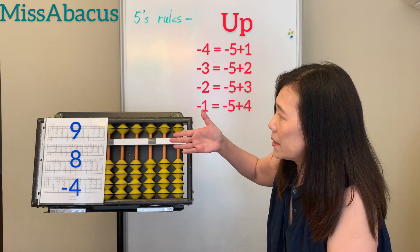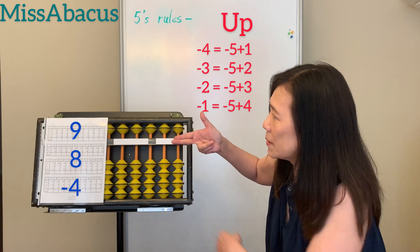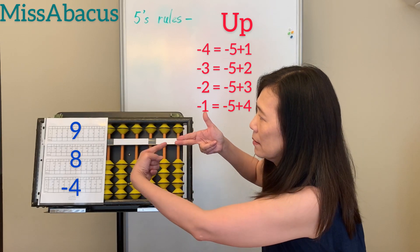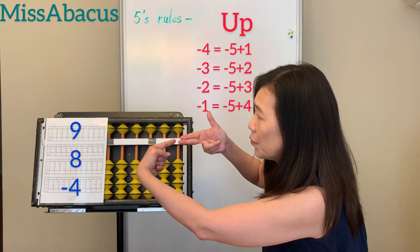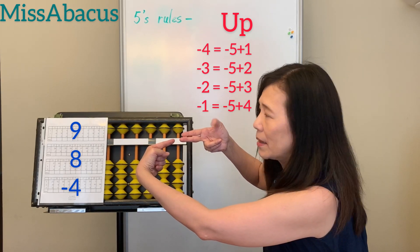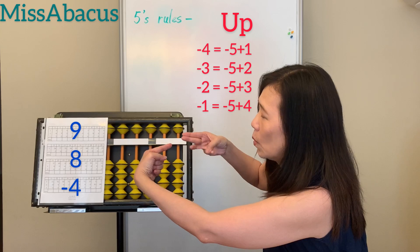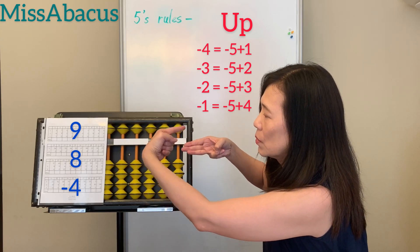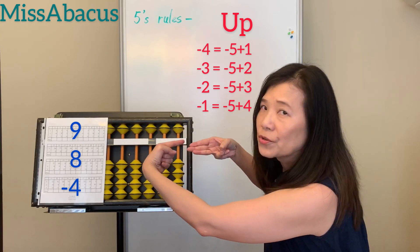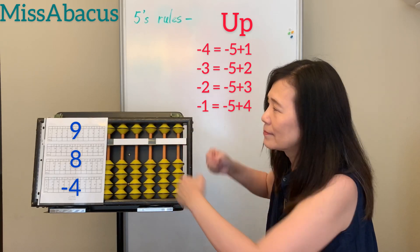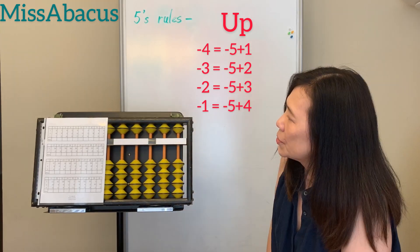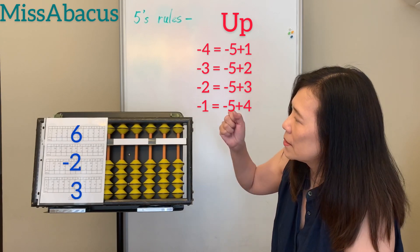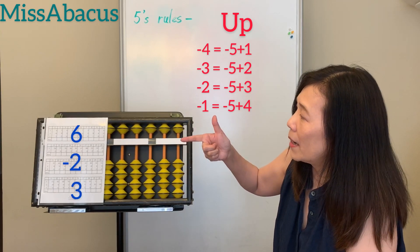Number 9: 9. Plus 8: minus 2, plus 10. Then minus 4: use the 5 — minus 5, plus 1. Answer: 13.